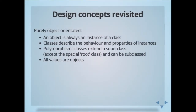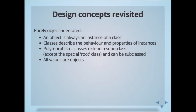Going back to the language itself: one of the big things about Smalltalk at the time was it was really the first object-oriented language. Similar to Ruby, an object is always an instance of a class. Classes behave as blueprints, describing the behavior and properties of class instances. There's polymorphic behavior — classes can extend a superclass, so you can create subclasses. And all values in Smalltalk are objects, whether it be nil, Boolean, or other such things.